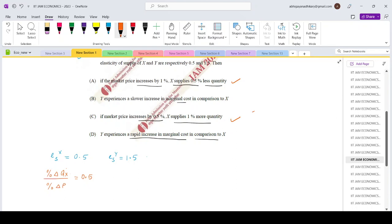So if you look at the first option, it says that if the market price increases by 1%, then X supplies 0.5% less quantity. That is not true because the value of elasticity is a positive number. Since the elasticity is positive, it simply implies that if the price increases by 1%, then the output supplied will increase by 0.5%. It will not reduce. So option A is incorrect.